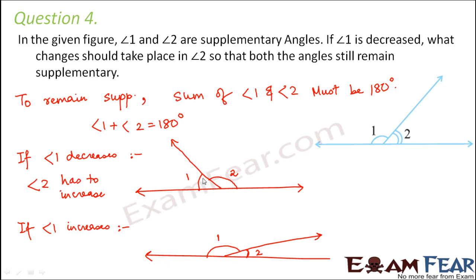So in order to maintain a straight line, if you are increasing one angle, the other angle has to decrease. Similarly, if you are decreasing one angle, the other angle has to increase.